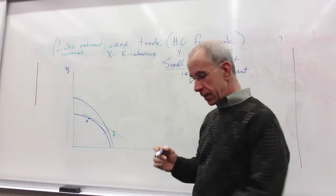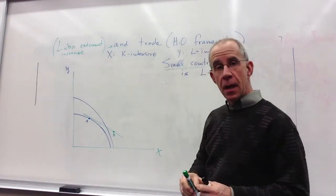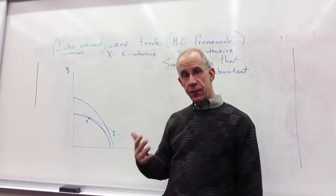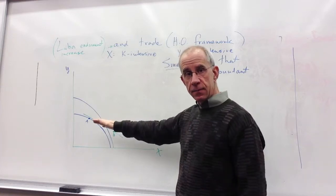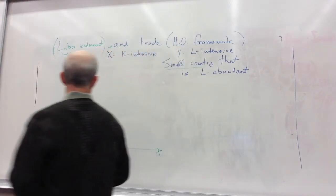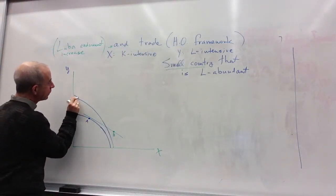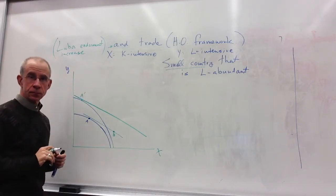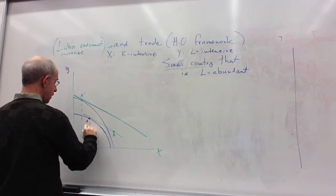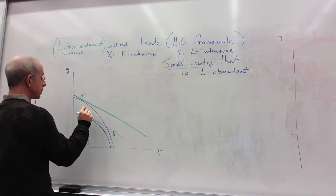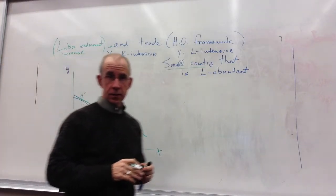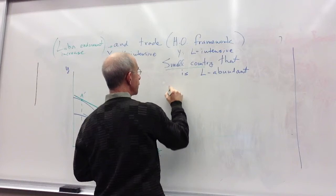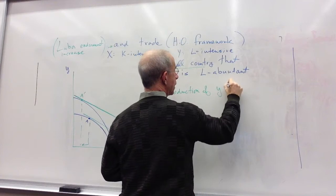So the green line is the world relative price, and now we're going to look at what the outcome for production will be if they face the same relative prices and they've had the capital stock increase. What you would have is a new production point at A-prime, which is going to be associated with a reduction in the amount of X that's produced and an increase in the amount of Y that is produced. As a consequence of the labor endowment, the production of Y will increase.